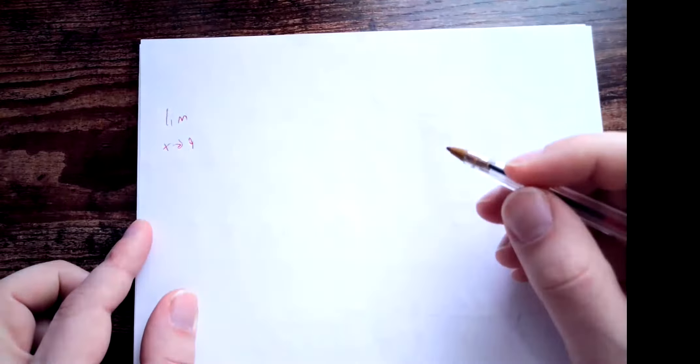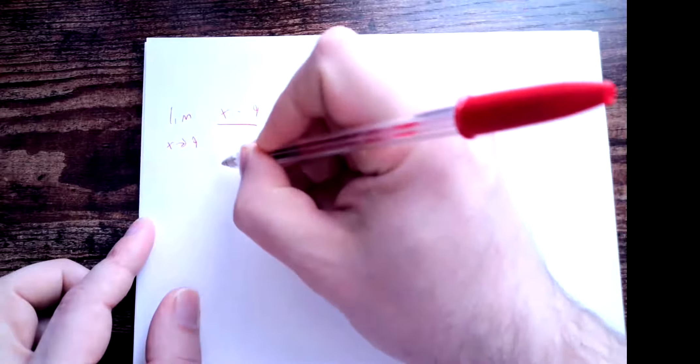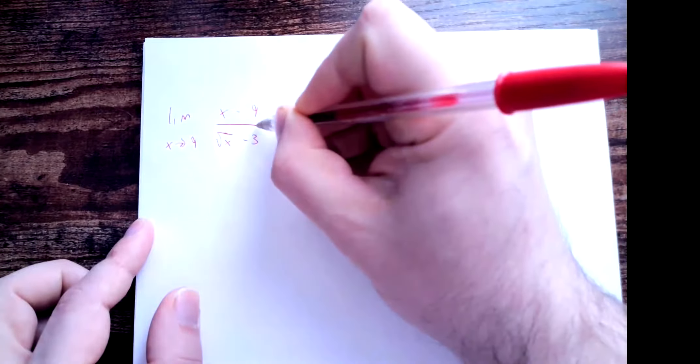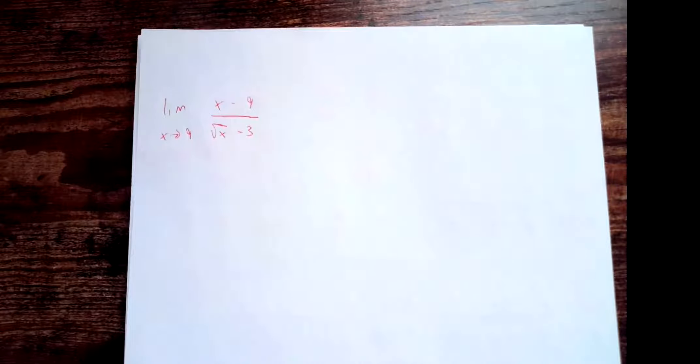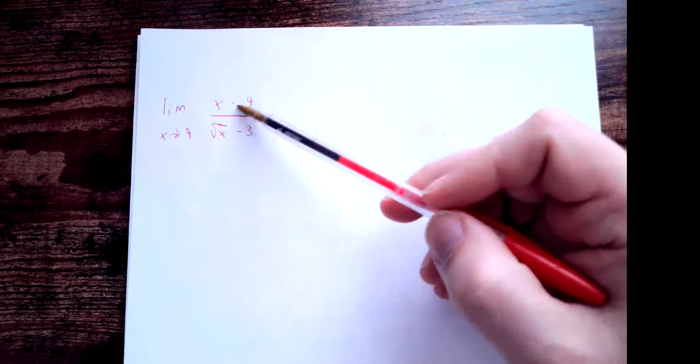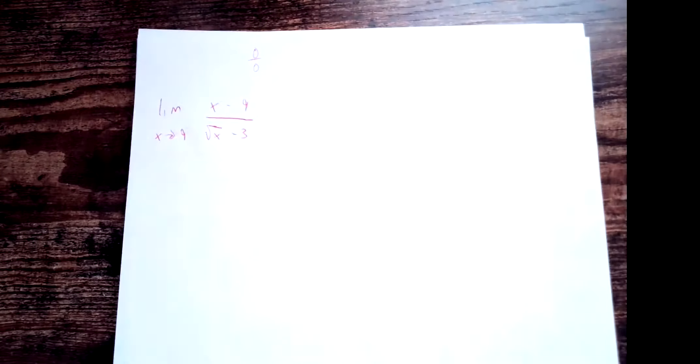This next example is from the book. Let's calculate the limit as x goes to 9 of (x − 9) over (√x − 3). Whenever you're asked to calculate a limit, go ahead and try plugging in first. Plugging in: the numerator is 9 − 9 = 0, and the denominator is √9 − 3 = 3 − 3 = 0. So this is indeterminate with the form 0/0.